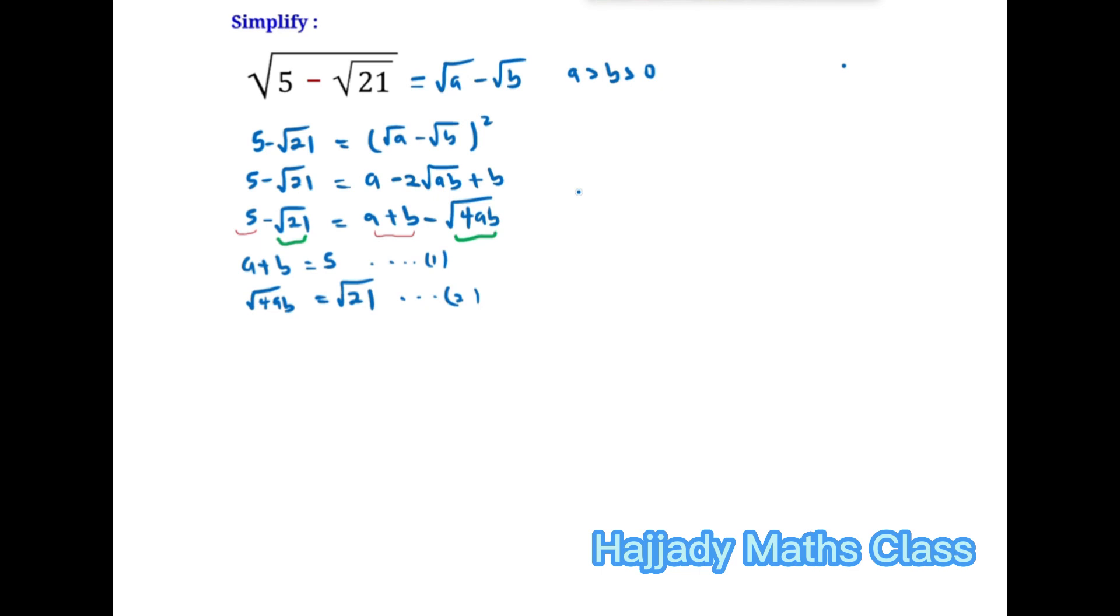Now simplifying this equation 2 by squaring both sides. So here I can have (√4AB)² = (√21)². This is going to give me 4AB = 21.